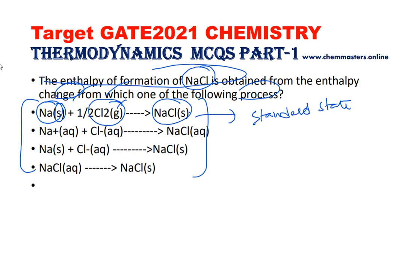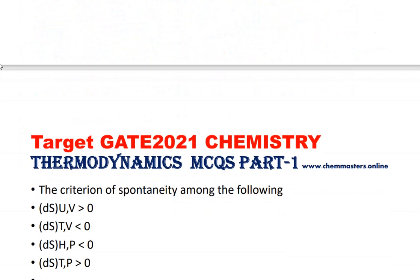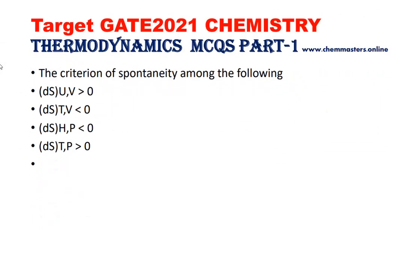So the first option is the correct answer. Remember that the standard states of all reactants and products must be present. The next question asks for the criterion of spontaneity among the following. To answer this, we need to look at the second law of thermodynamics, from which we can express: dS = dq/T, or equivalently dq = T dS.